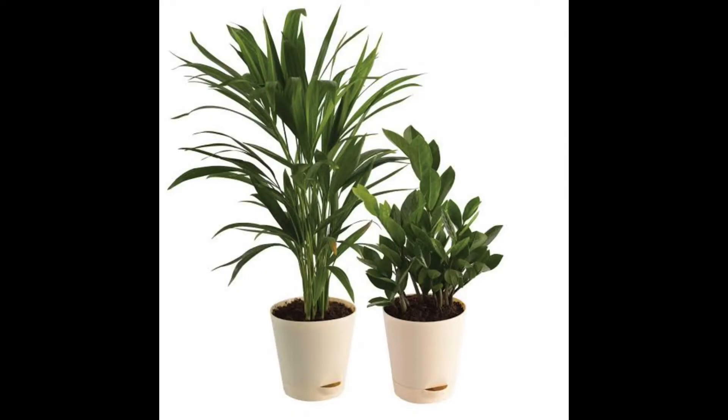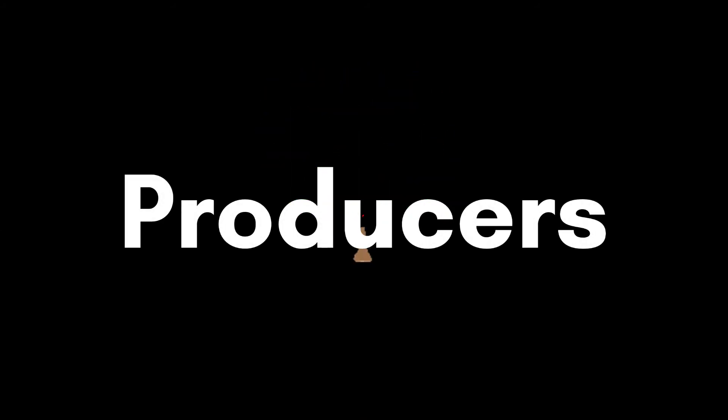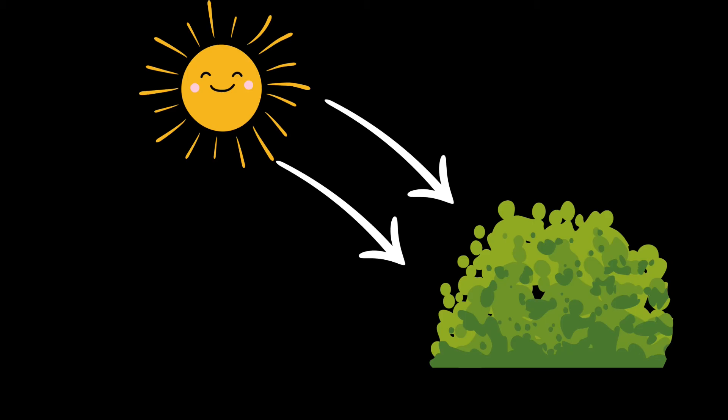The first link of the chain starts from the plant. The plants are called producers because they make their own food. Plants use energy from sun to make their food. They produce the food through the process called photosynthesis.